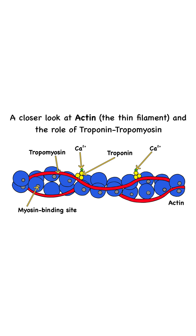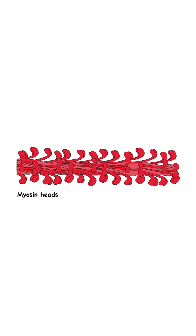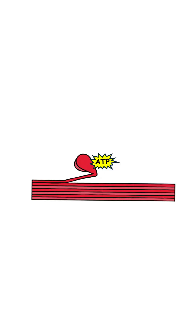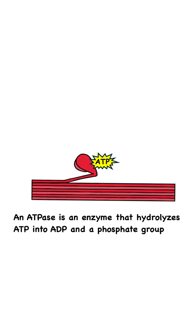Once these binding sites are exposed, the contraction cycle begins. Myosin heads are the workers of contraction. Each myosin head has an ATP binding site that functions as an ATPase — an enzyme that hydrolyzes ATP into ADP and a phosphate group.